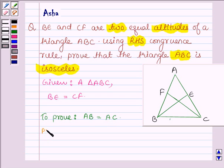Let us now start with the proof. In triangle BCF and CBE, in these two triangles BC is equal to CB. This is the side which is common to both the triangles.